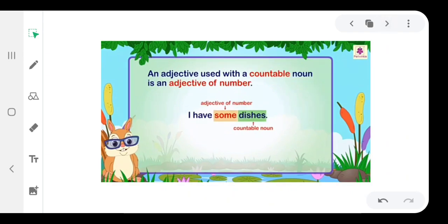An adjective used with a countable noun is an adjective of number. For example, I have some dishes. Some is an adjective of number. Dishes is a countable noun.